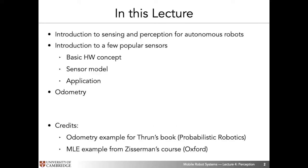In this lecture I'll be introducing concepts of sensing and perception for autonomous robots. We'll look at a few popular sensors with respect to their hardware concept, develop formal sensor models, and look at applications that use these sensors to do useful things. At the end we'll also discuss odometry, which is a very crucial type of sensing for mobile robots.